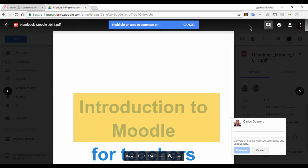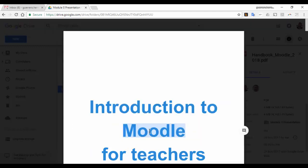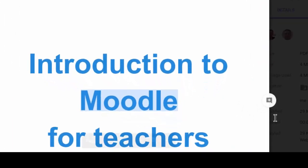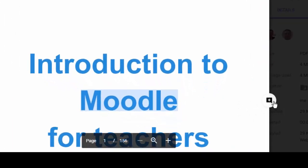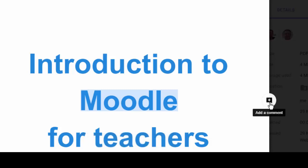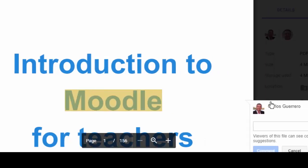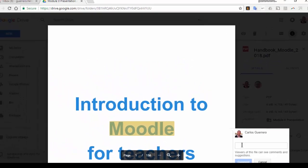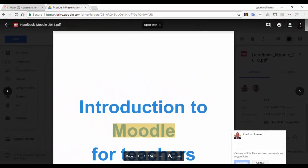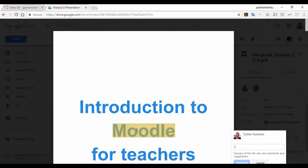The second option is highlighting the word or the part of text where you want to add your comments, and then to the right of it you will find an add a comment icon that you can click, and the comment will be related to that particular part of the text that has been highlighted.